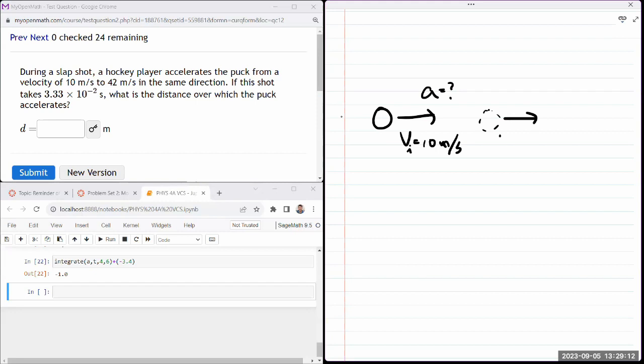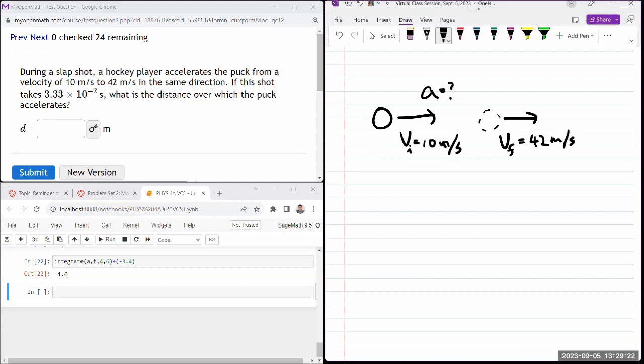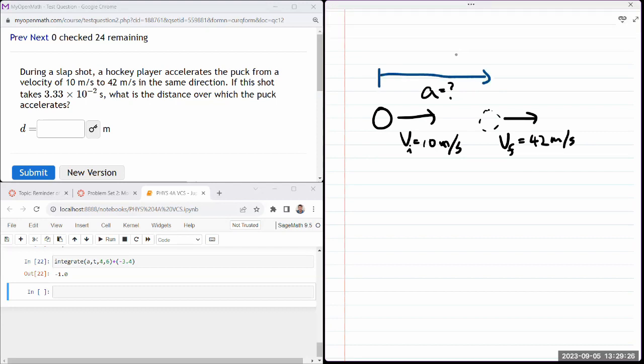After the acceleration is done, it has some final speed of 42 meters per second. We are given some duration of time for the shot - it takes 3.33 times 10 to the minus 2 seconds. What is the distance over which the puck accelerates?